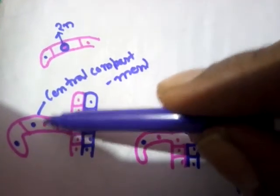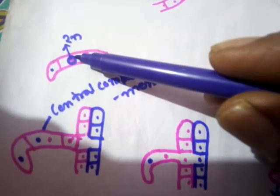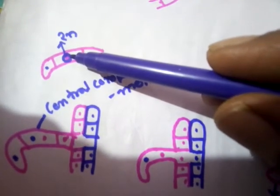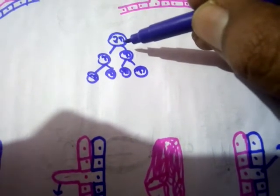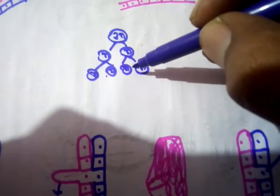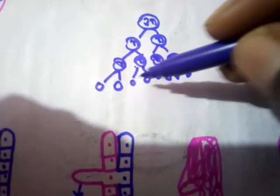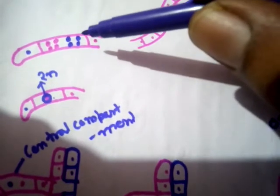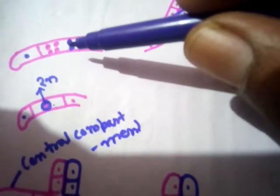After the mitotic division in the ascogenous hypha, we get four nuclei — two of the negative strain and two of the positive strain (shown in blue and pink). After the formation of these four nuclei, a partition develops in such a manner that the central compartment bears two nuclei: one of the negative strain and one of the positive strain. The remaining compartments each bear a single nucleus. Soon, the two nuclei in the central compartment get fused, resulting in the production of a diploid zygote nucleus.